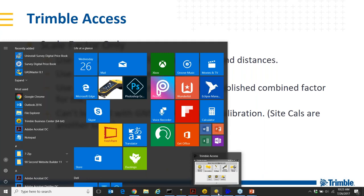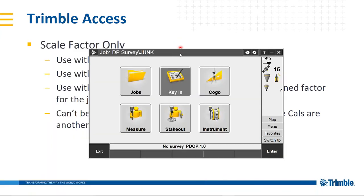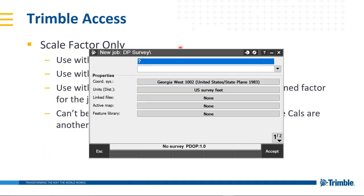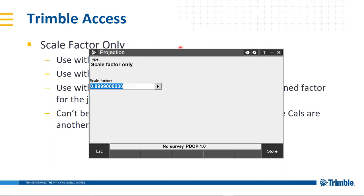Let me break into Trimble Access. I've got an emulator running on my computer. I'll go to Jobs, New Job, and name this Job Number One. Under coordinate system I'll choose Scale Factor Only — probably the easiest coordinate system you'll ever set up. Put in a scale factor of one. This is what you use when you're using a total station and want one-to-one distances — the total station measures a thousand feet, you get a thousand feet. No scaling going on. Use this for assumed coordinates or horizontal ground coordinates when not mixing with GPS data.